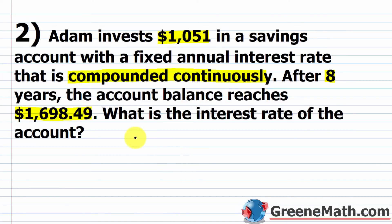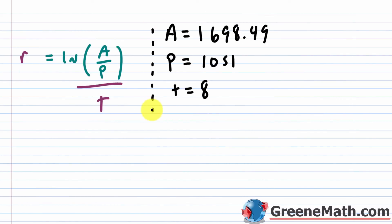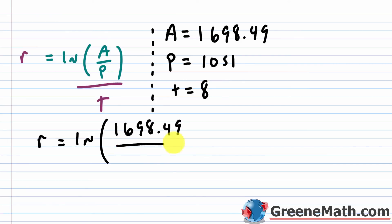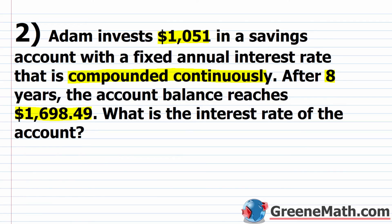Using the formula r equals ln(A/P) divided by t: A equals $1,698.49, P equals $1,051, and t equals 8. So r equals ln(1,698.49 divided by 1,051) divided by 8. Keying this into the calculator and rounding to the nearest hundredth gives approximately 0.06, or 6%.